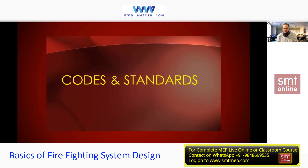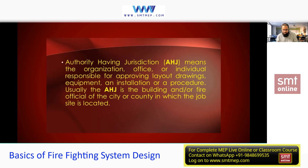Do you know the difference between codes and standards? A standard is a general reference — like NBC or NFPA. A code is mandatory and required to be used in a project. For example, if your local authority accepts NFPA, then NFPA becomes the code for your project. Codes are mandatory. Next, AHJ — Authority Having Jurisdiction — is your local authority. For example, if you're designing a project in Dubai, you must take approval from that local authority, which we call AHJ. They are also responsible for on-site inspection.